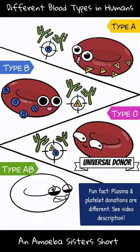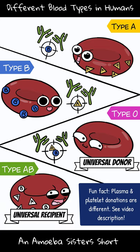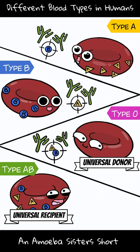Type AB has both A and B antigens, making them universal recipients. But they can only donate to other AB types.